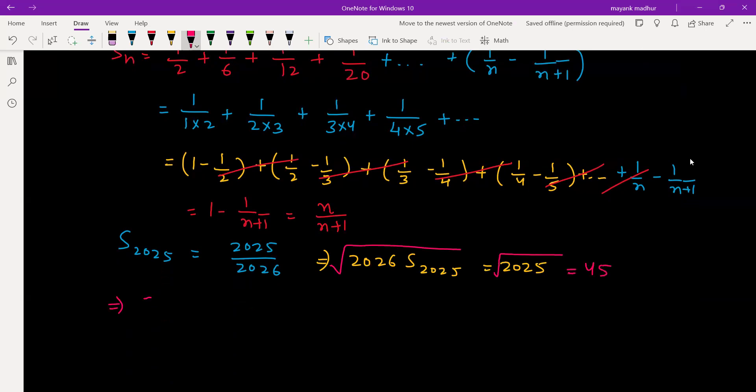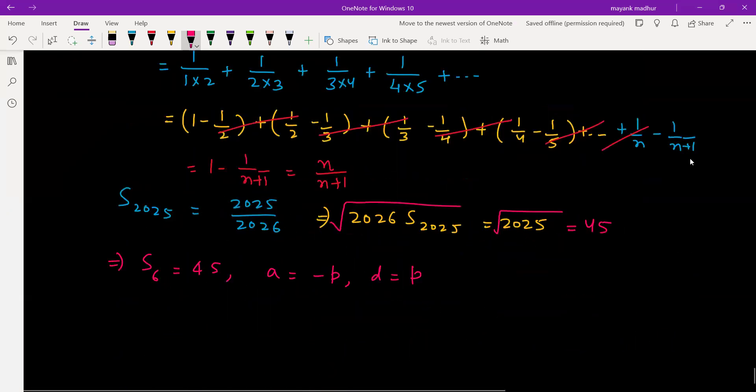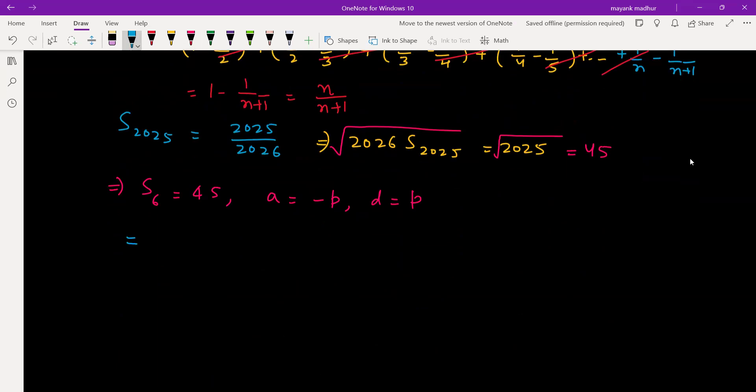So now we have the information S_6 is 45. First term is negative p and common difference is equal to p. Let's use the sum of n terms of AP formula, which is n/2 into 2a plus (n-1) into d. d is p basically. And this value is 45. So this will be 5 minus 2, 3. And this is also 3. So 9p is equal to 45, which gives us p is equal to 5.